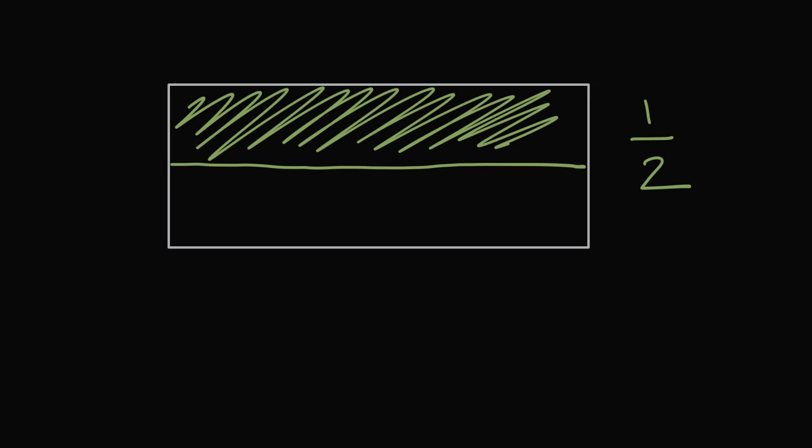Let's try to show one half. Let's start with one half this time. If we split this rectangle in half, we're trying to show one out of two equal pieces. We'll shade one half, one of the two pieces. So this is one half.